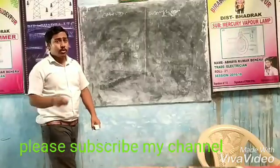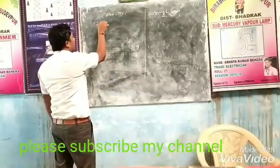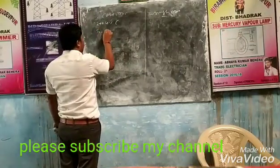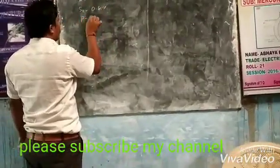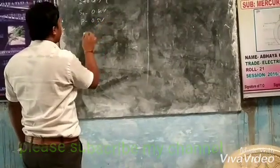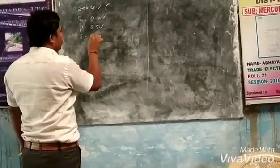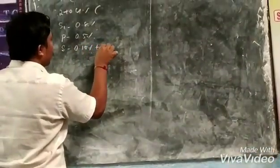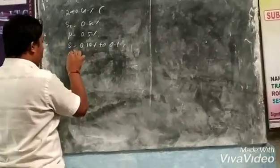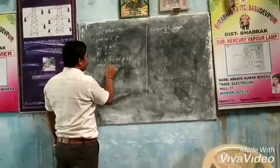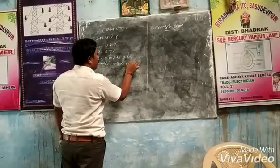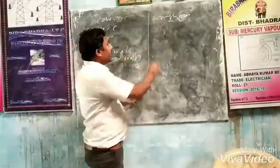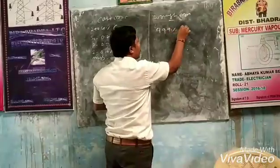Cast iron contains 2 to 4% carbon. The remaining composition includes silicon 0.8%, phosphorus 0.5%, sulfur 0.5%, manganese 0.5% to 1%. Wrought iron contains 99.9% pure iron.